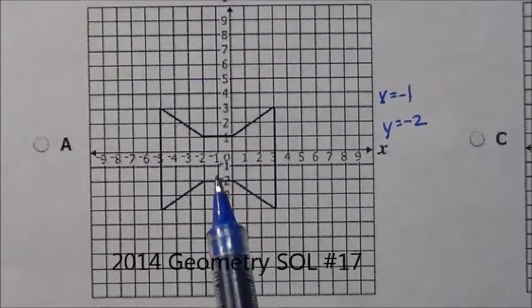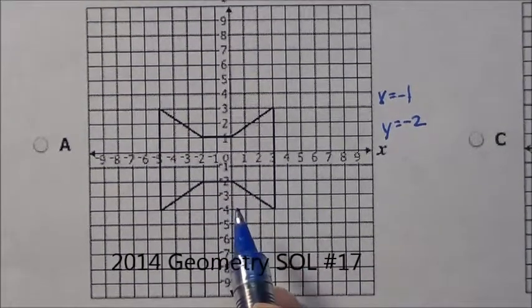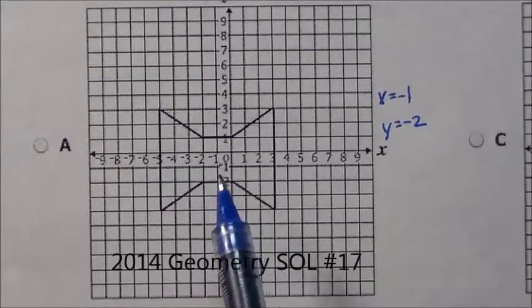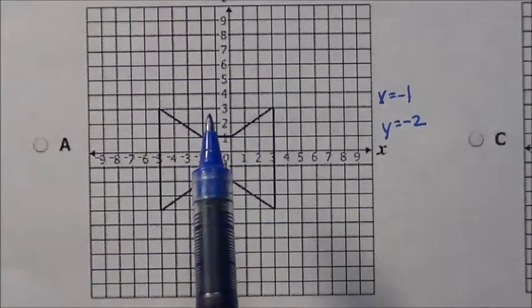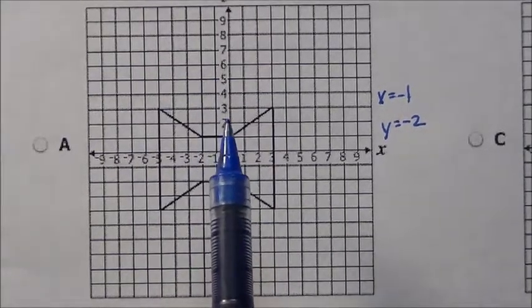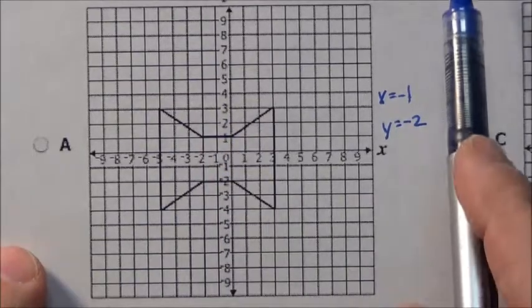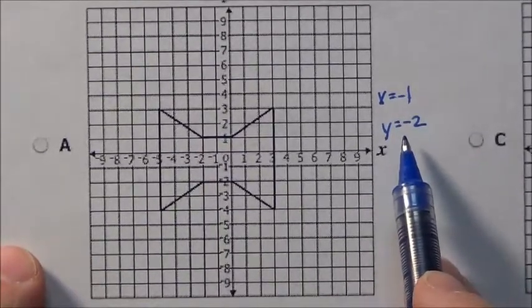Here is question 17. I'm having to zoom in on each graph because there are four graphs here. It says for which polygon are both x equals negative 1 and y equals negative 2 lines of symmetry?